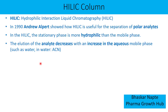How does analyte retention work in HILIC? Analyte retention decreases with an increase in the aqueous mobile phase such as water. In HILIC mode, water is the strongest solvent. Then comes methanol, ACN, THF, followed by dichloromethane, chloroform, and n-hexane at the weakest end. So if you increase the quantity of water — the strong solvent — that results in a decrease in retention time for your analyte.